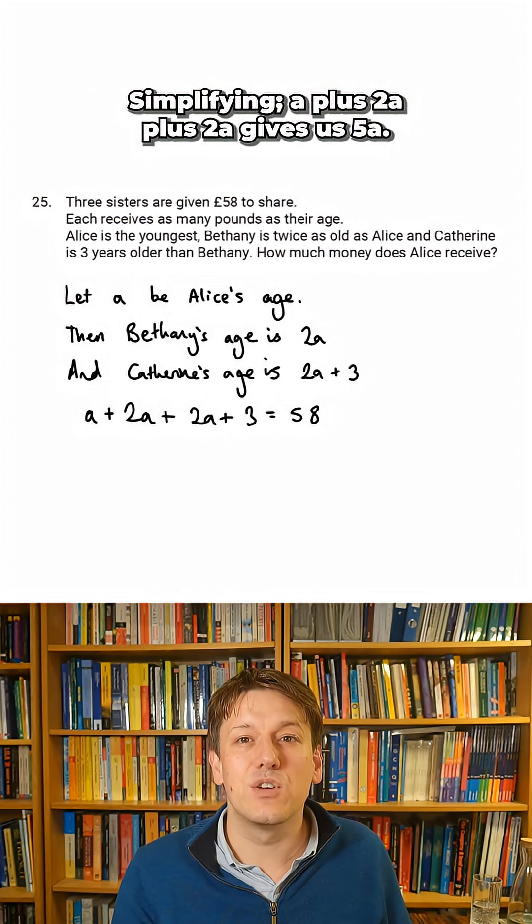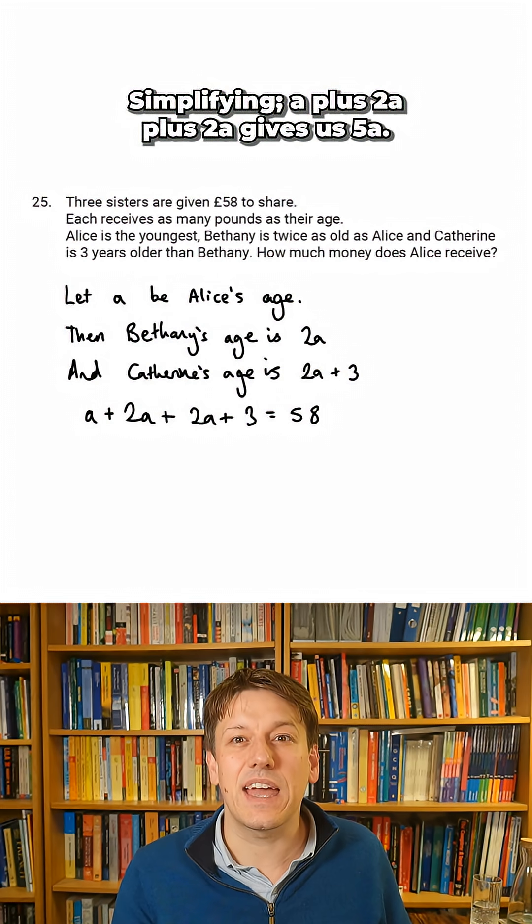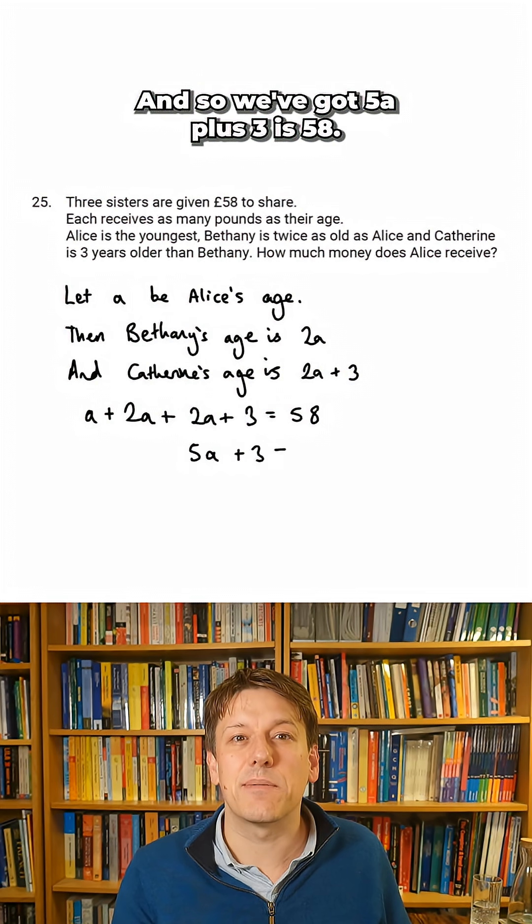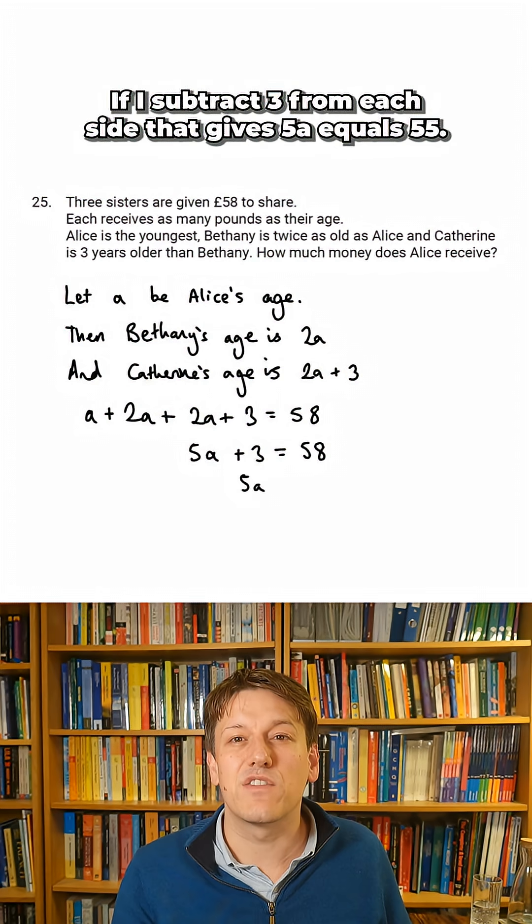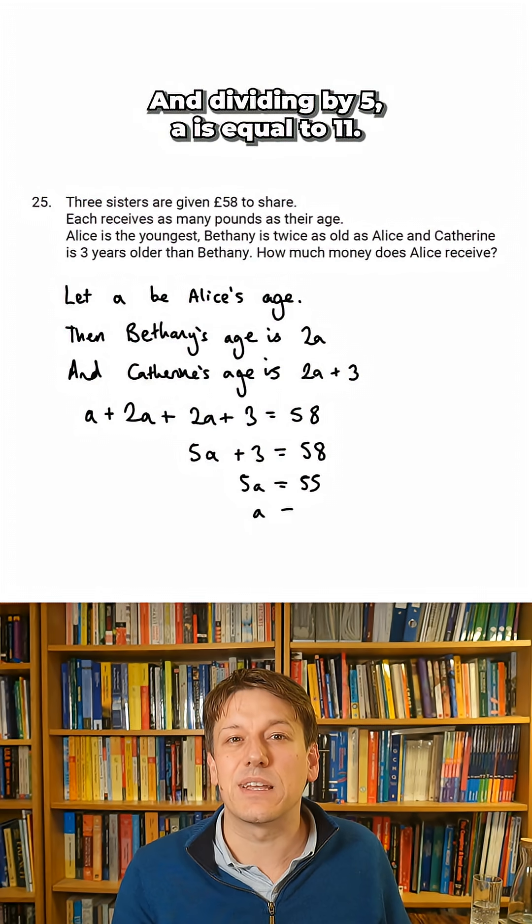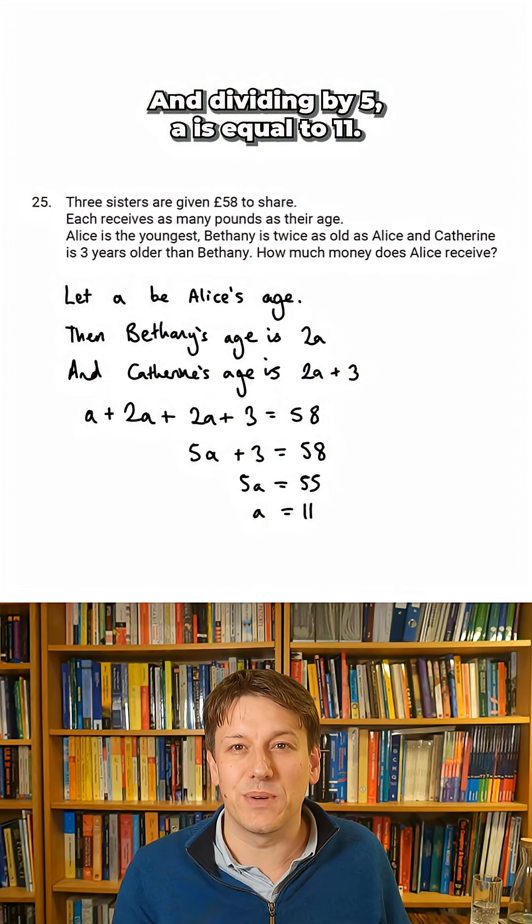Simplifying, A plus 2A plus 2A gives us 5A, and so we've got 5A plus 3 equals 58. If I subtract 3 from each side, that gives 5A equals 55, and dividing by 5, A is equal to 11.